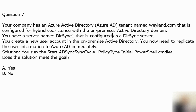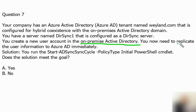Question number 7: your company has an Azure Active Directory tenant named Waylane.com that is configured for hybrid coexistence with an on-premise Active Directory domain. You have a server named DIRSYNC1 configured as a directory sync server. You create a new user account on the on-premise Active Directory. We have a setup of AD and Azure AD with synchronization running, and we need to replicate this user information to Azure AD immediately.